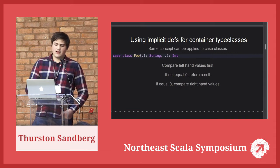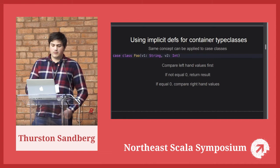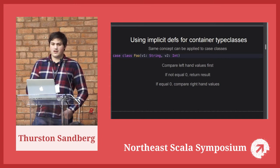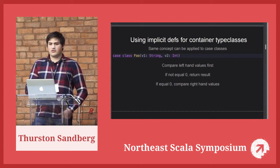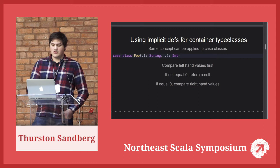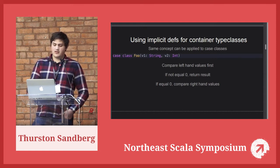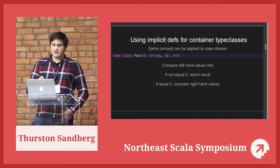Let's look at case classes — a regular class with a focus on constructor data. Like option has type T, a case class has the constructor argument types. For case class Foo with a string and an int, we compare starting with the leftmost argument: if the comparison is not zero, return that result immediately; if it is zero, move to the next constructor argument. So for Foo, compare the V1 strings first, and if equal, compare the V2 ints.